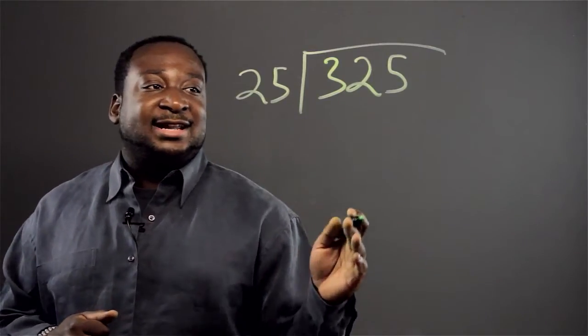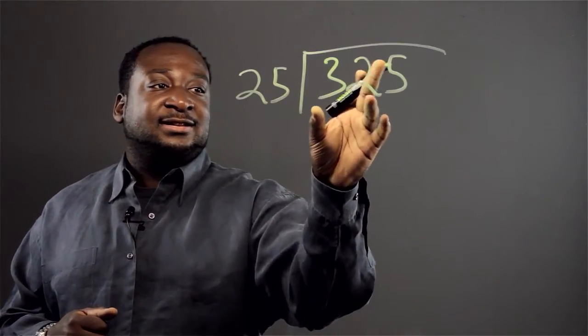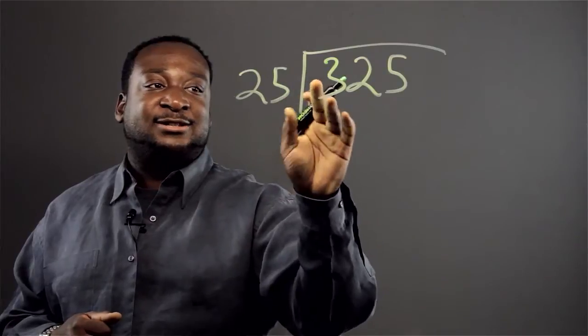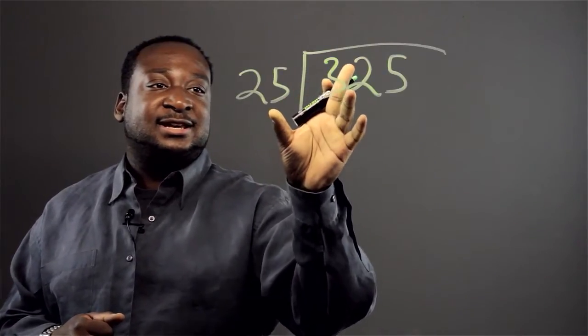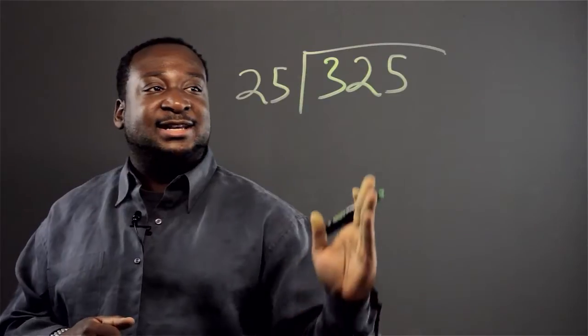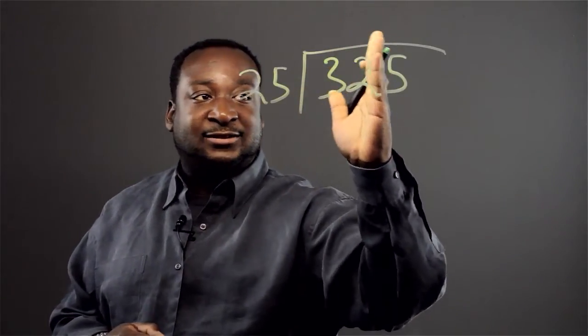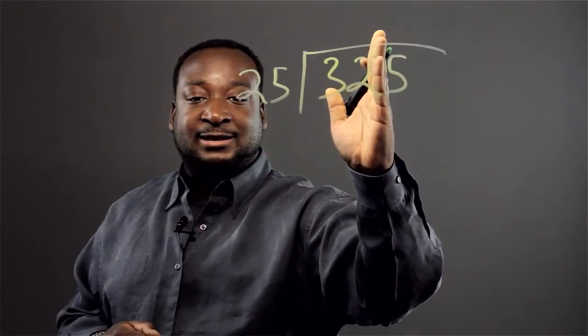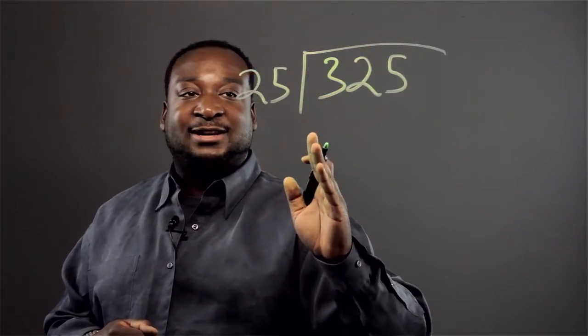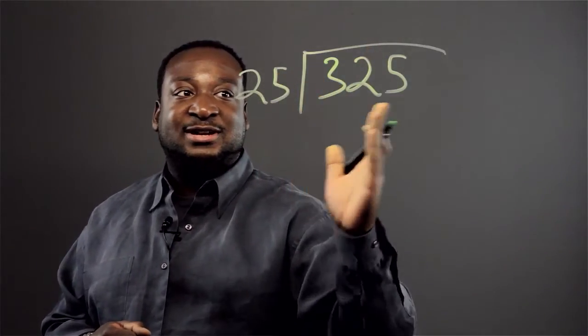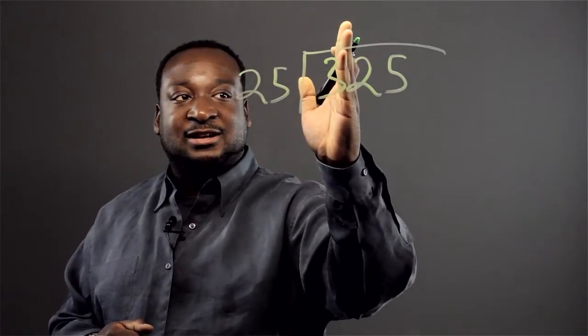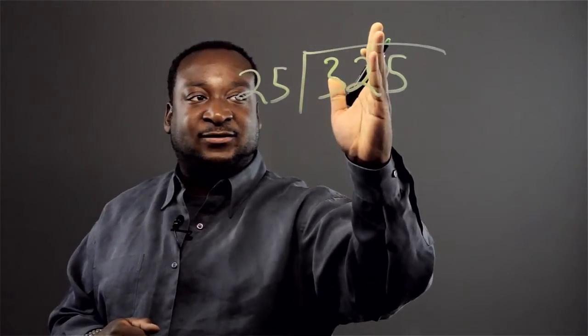Now dividing three-digit numbers by two-digit numbers is the same as you do with the one digit, but instead of just looking at the first digit you look at the first two digits. Before when you divided with a one-digit number you just looked at the first digit, but in this case you look at the first two digits.